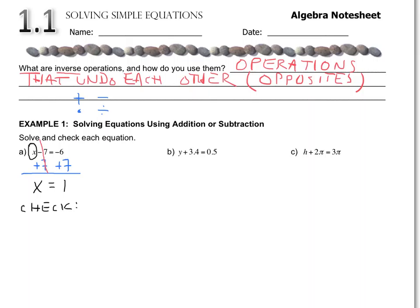I take x out of the equation and plug in what I think is the answer, then fill in the rest of the equation just as we see it. I put a question mark because we're trying to prove if that's true. Following PEMDAS: 1 minus 7 equals negative 6, and negative 6 does equal negative 6. It is checked. My answer is x equals 1.